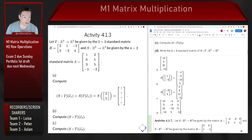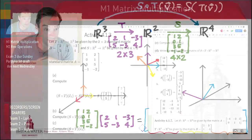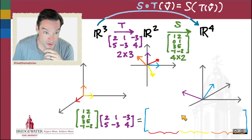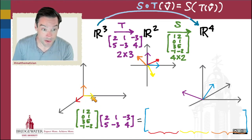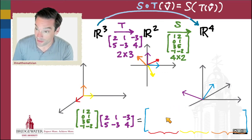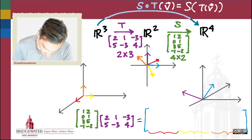Just to step back for a second and see what exactly happened in that calculation: we're trying to find these three columns, which are the images of these three standard basis vectors from R³. We're taking the first standard basis vector, applying T to it and getting some vector here, then applying S to that and getting some vector over here, which becomes this column of the standard matrix.